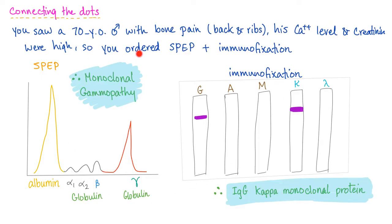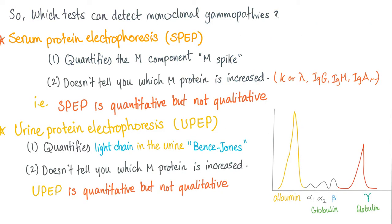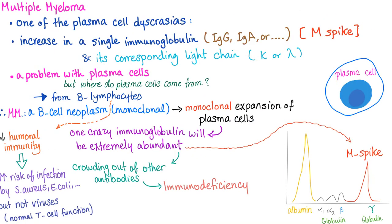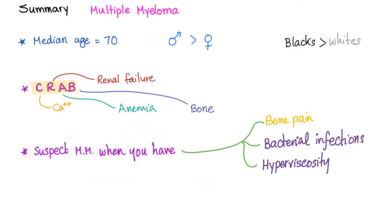This is how to diagnose multiple myeloma, but to confirm the diagnosis you need a bone marrow biopsy. The definition of multiple myeloma is an increase in a single immunoglobulin and its corresponding light chain — it is a B cell neoplasm. From the previous lecture: median age is 70, CRAB is evidence of end organ dysfunction.